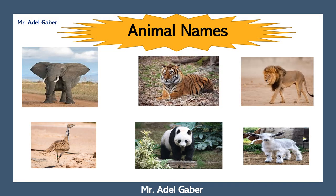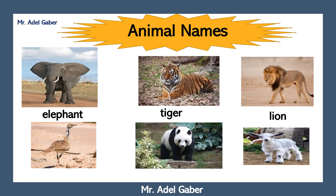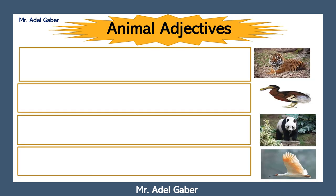Animal names. Look at these pictures. Do you know the names of these animals? Yes, you are excellent. Elephant, Tiger, Lion, Hoopoe Bustard, Panda, Goat. Now let's look at animal adjectives.